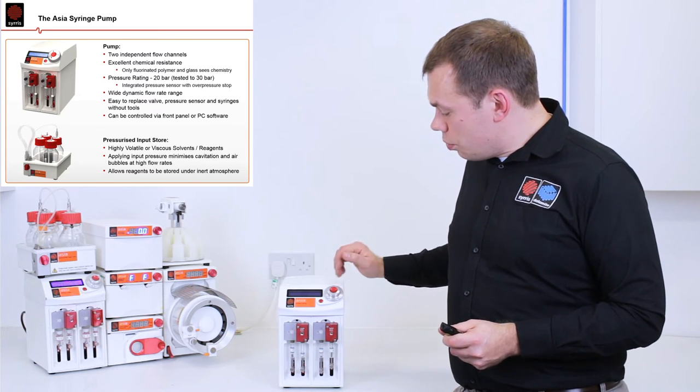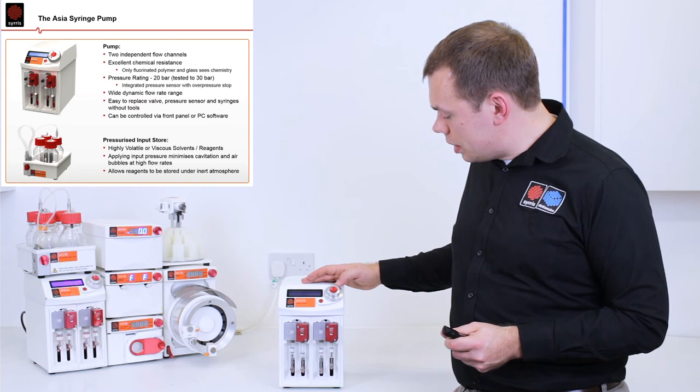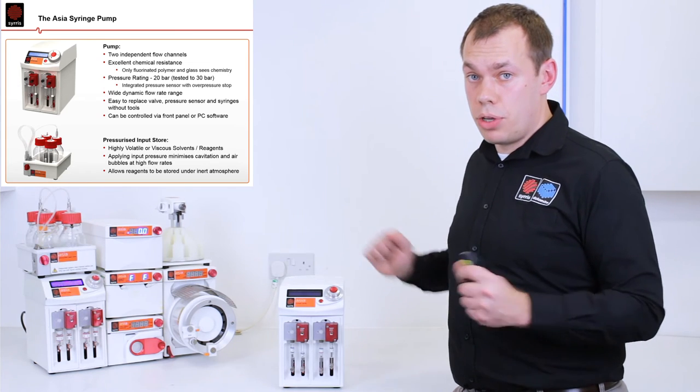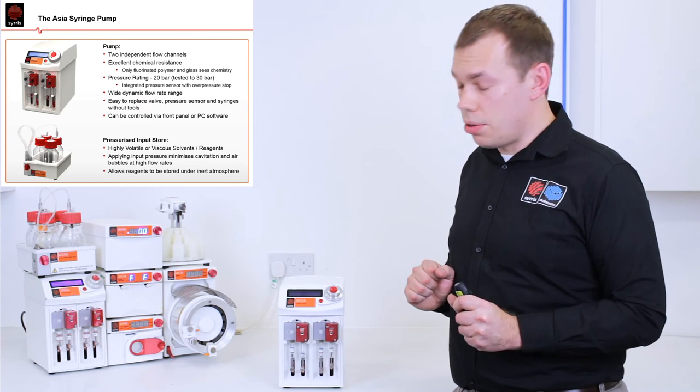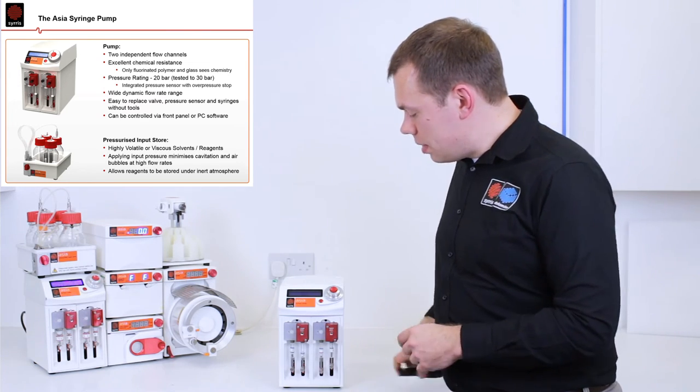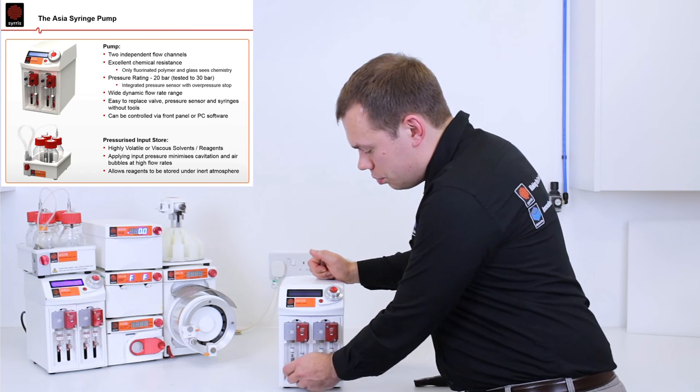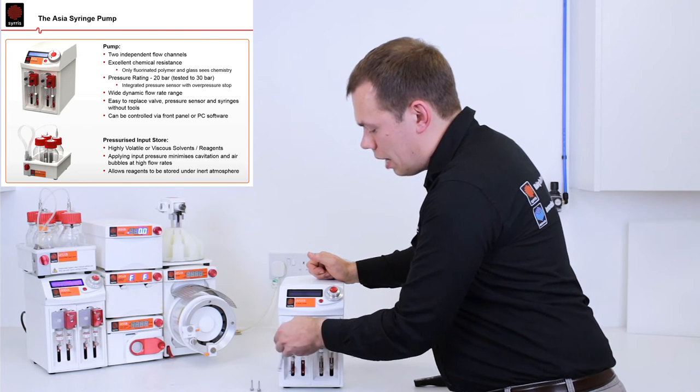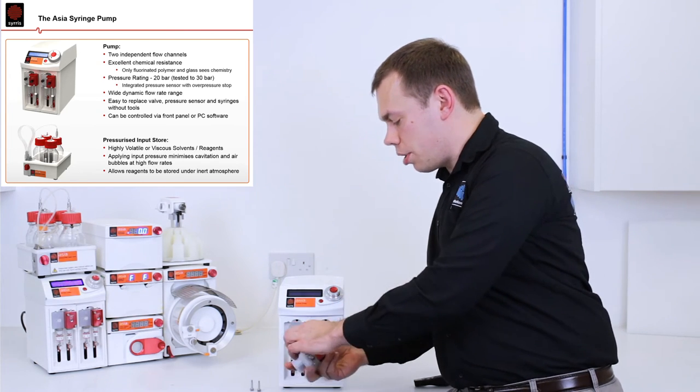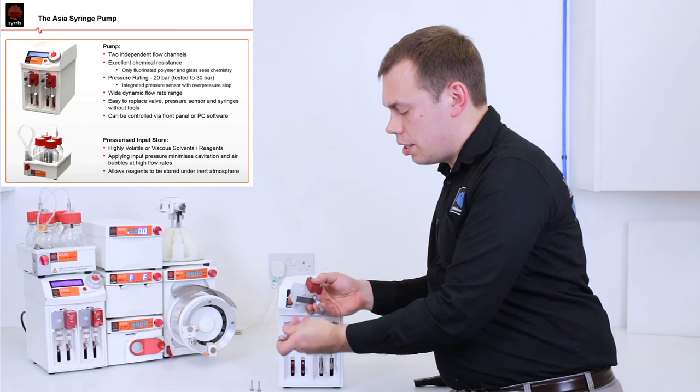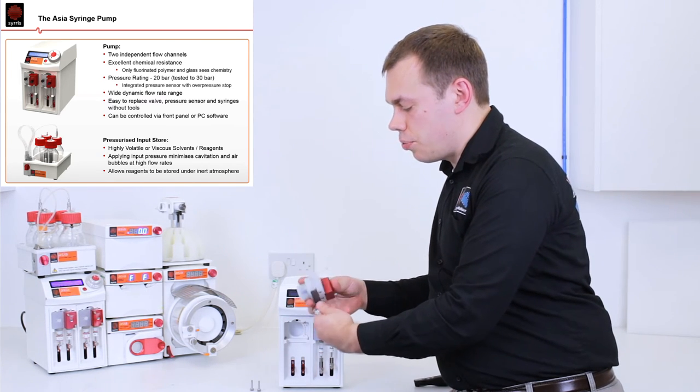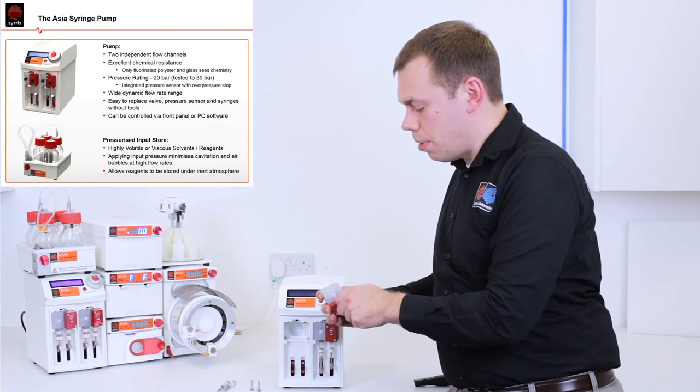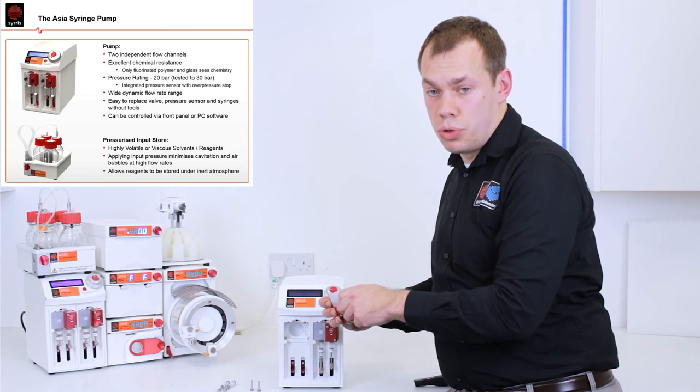The pump can be controlled from the turn and twist and click wheel or connected to a computer by a USB cable and fully automated by the Asia manager software. The pump is easily serviceable by removing the two thumb screws at the bottom. You can then pull out the full block and then access each individual part such as the syringes or the valve block. So you can service the pump with minimum effort and no tools required.